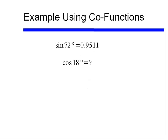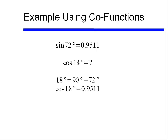Let's do an example using what we've just learned. If sine of 72 degrees equals 0.9511, and I ask you — without using a calculator — what cosine of 18 degrees is: if you recognize that 18° is the complement of 72°, that is, 90° − 72° = 18°, then the answer is simply that cosine of 18 degrees equals sine of 72 degrees, or 0.9511.